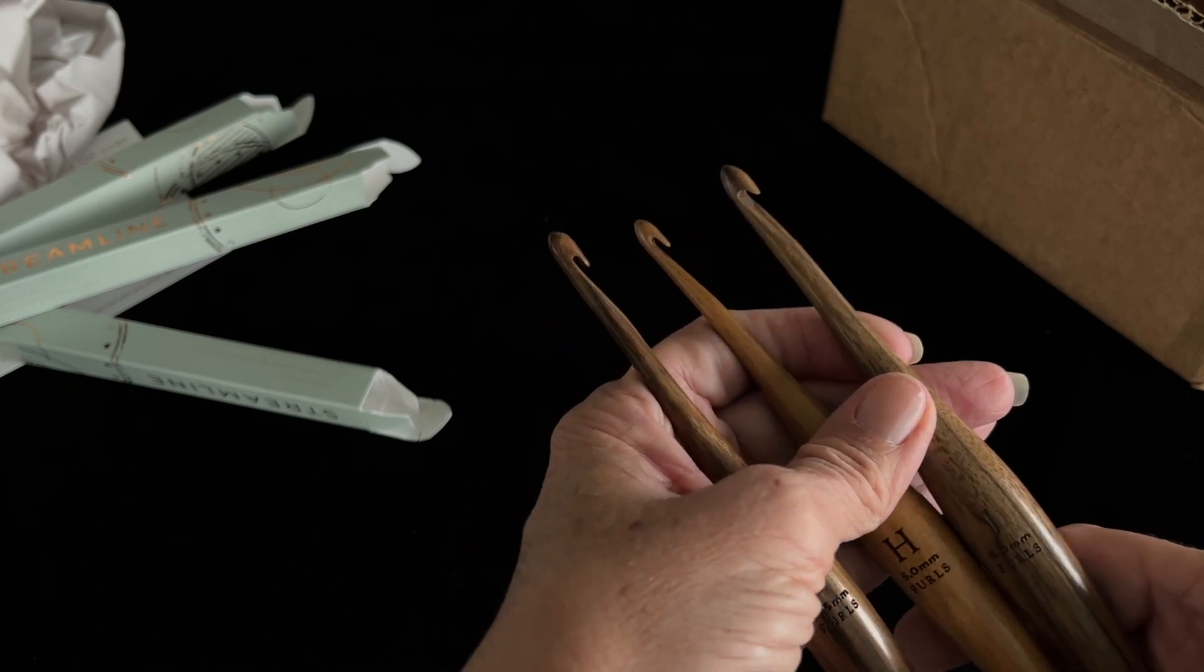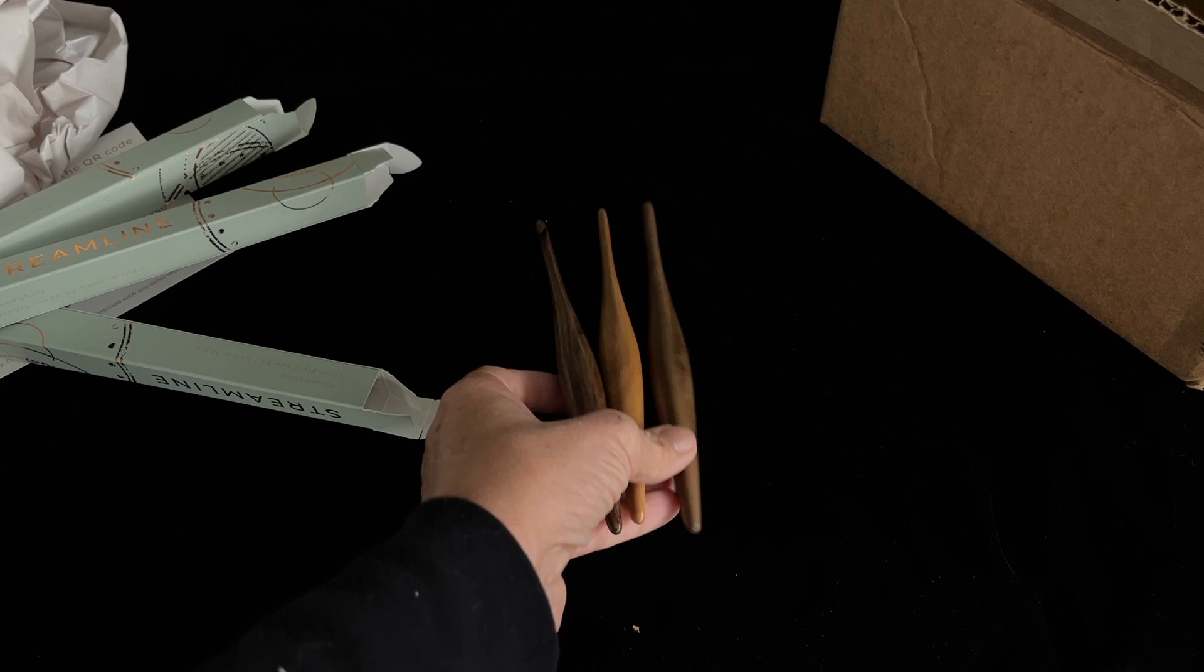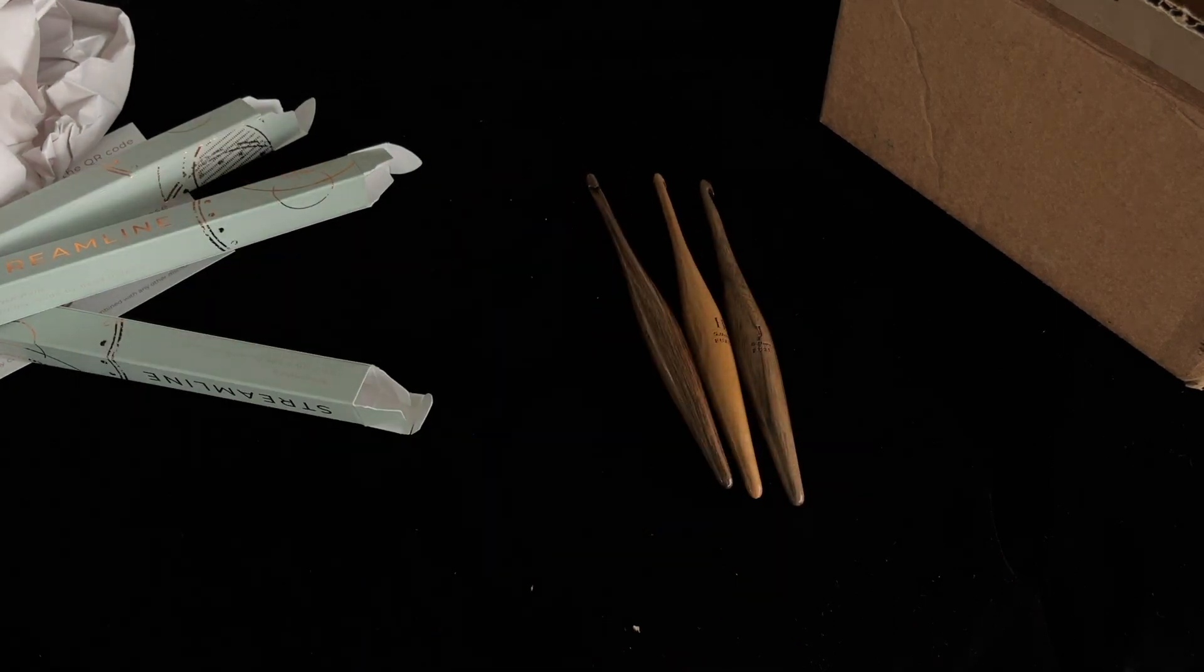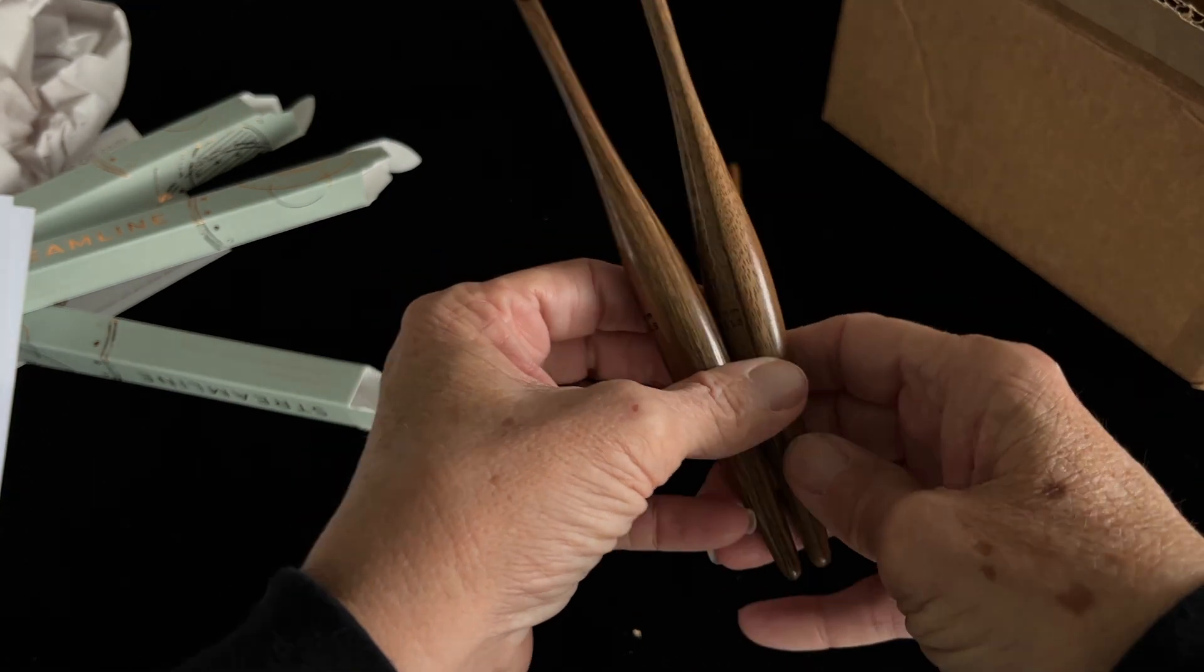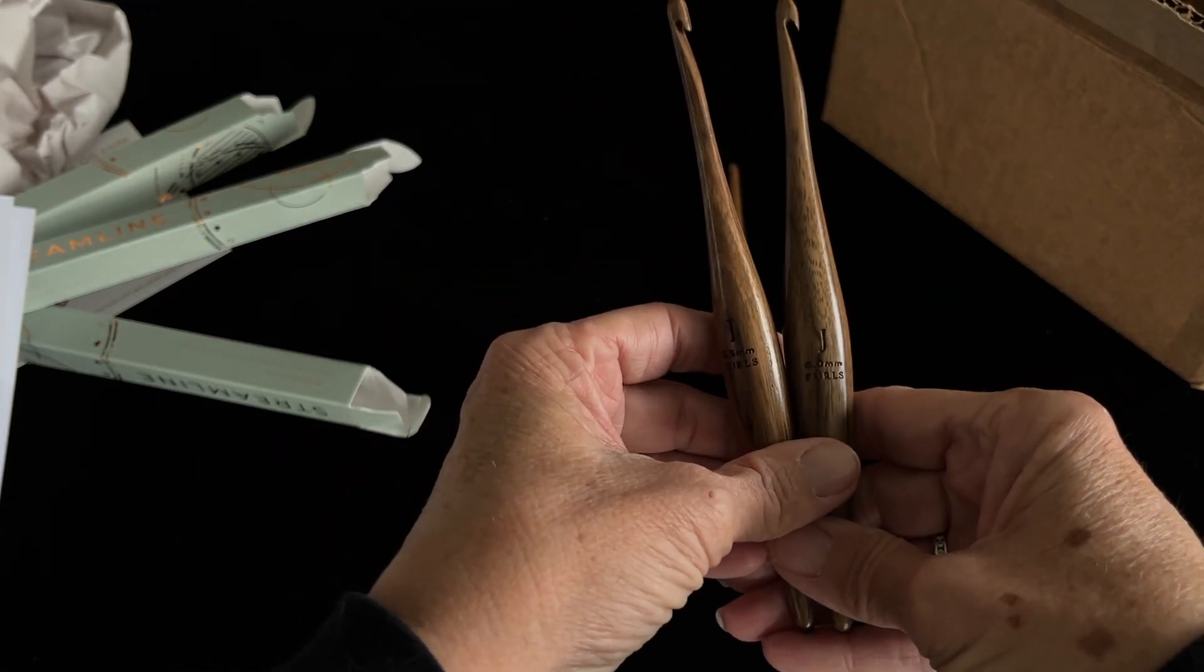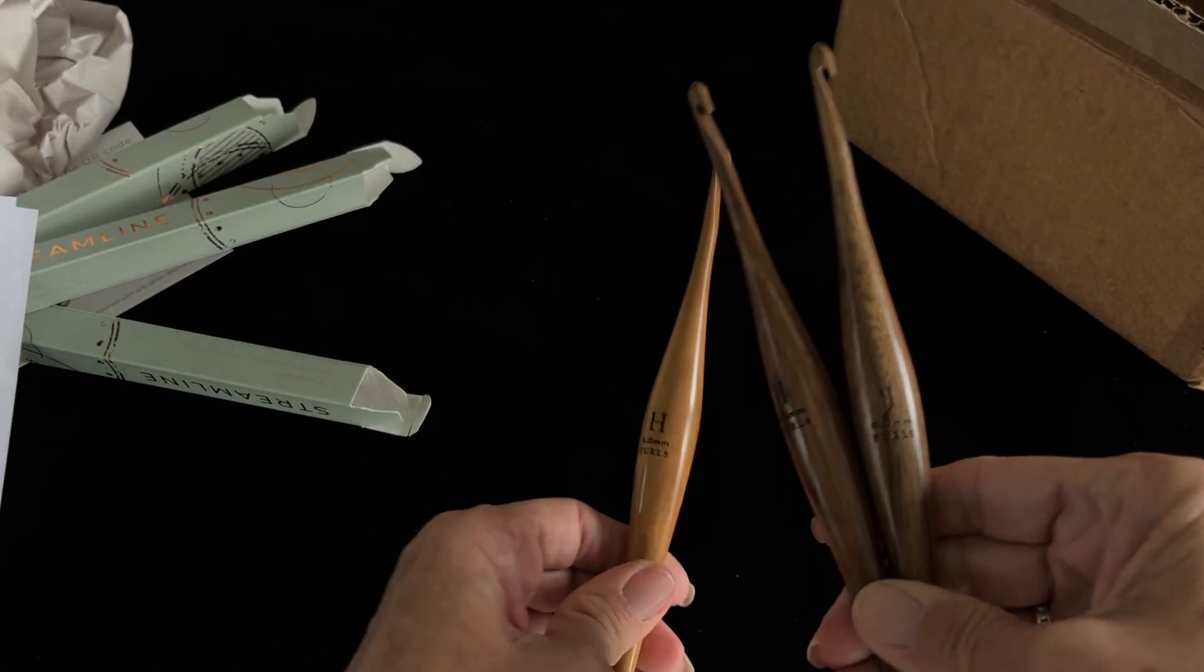So these are the heads on them. And I believe, let me look at my slip here and see. Okay, these two are the laurel woods and this one is the camwood.